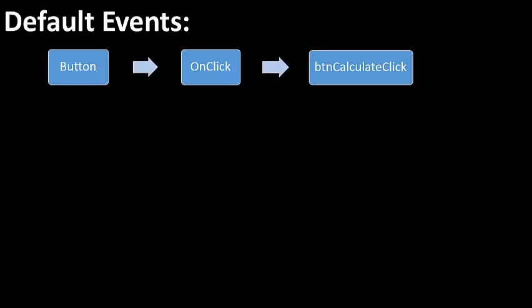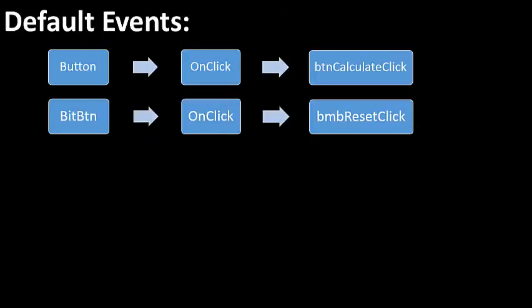All Delphi components have default events. A component's default event is the event that is normally performed by that type of component. For example, there are events triggered when you right click on a button or move your mouse over it, but we normally expect a user to click on a button — therefore onClick is the button's default event. The onClick event of BTN Calculate is linked to an event handler called BTNCalculateClick. The bit button's default event is also onClick, and if you double click on a bit button called BMBReset in design time, Delphi links its onClick event to an event handler called BMBResetClick.